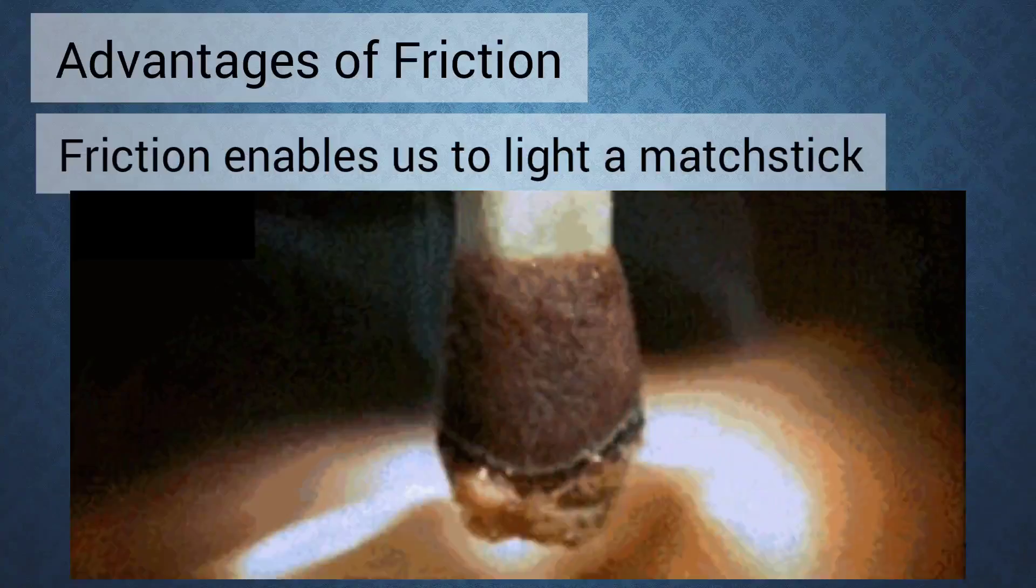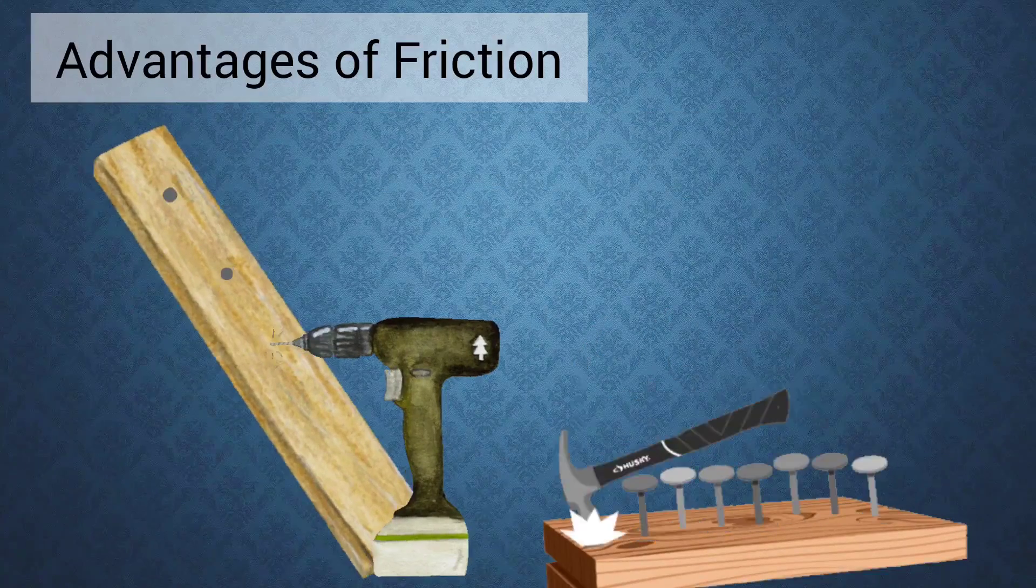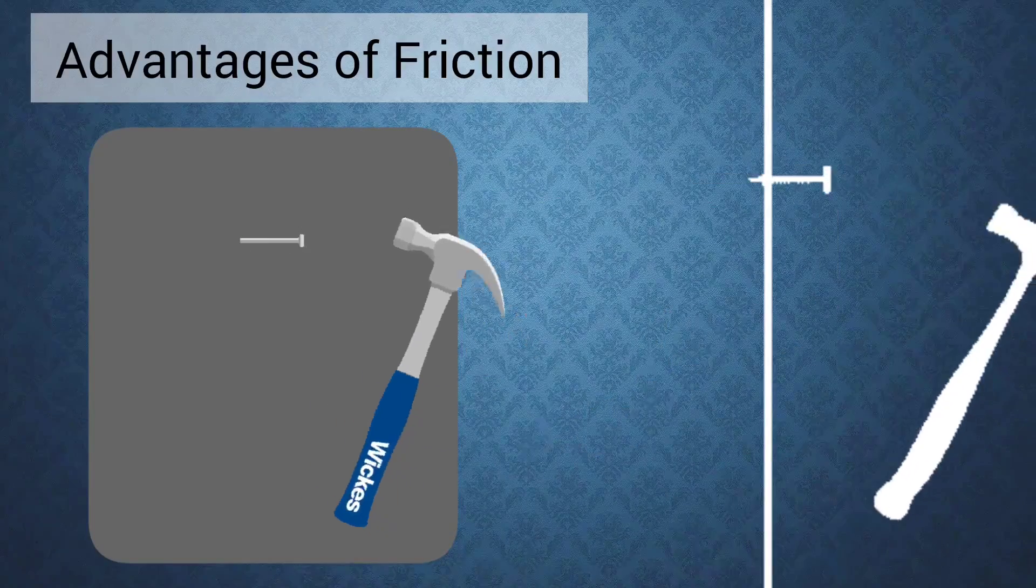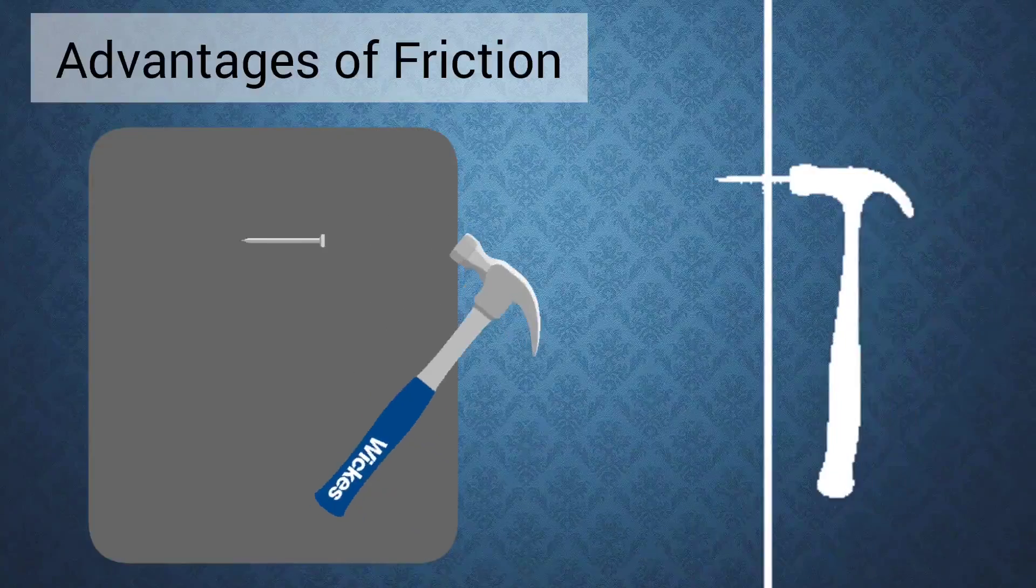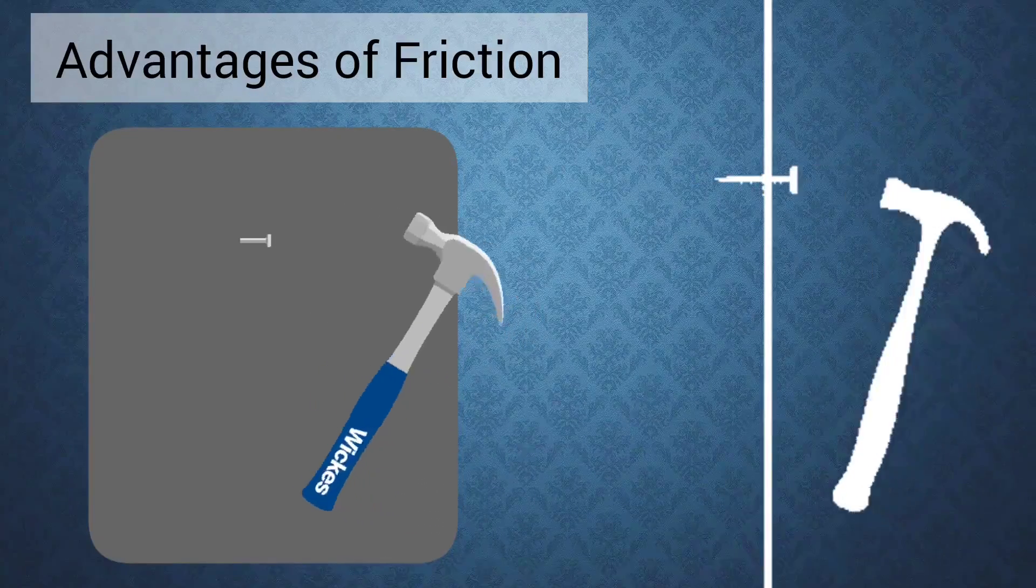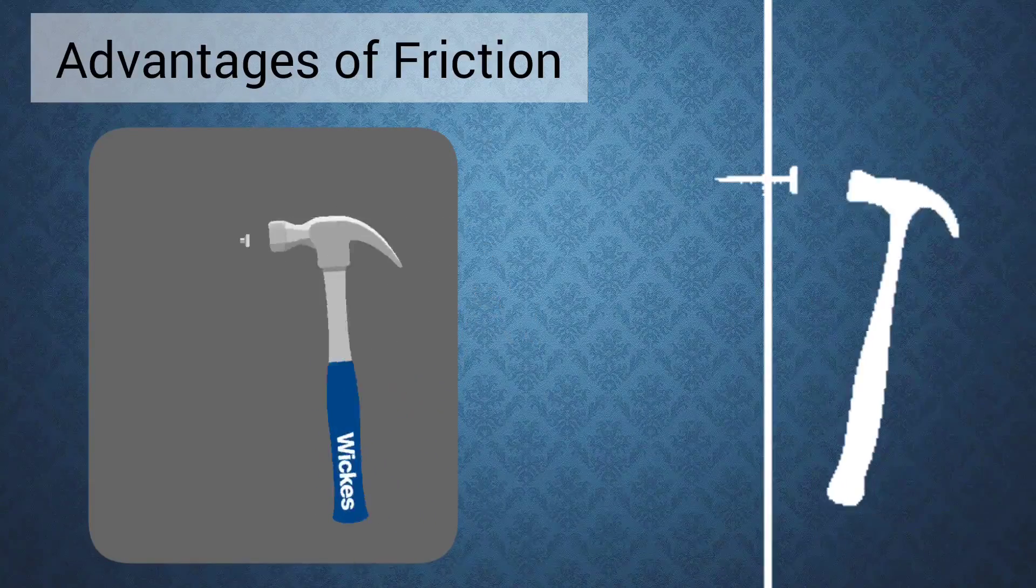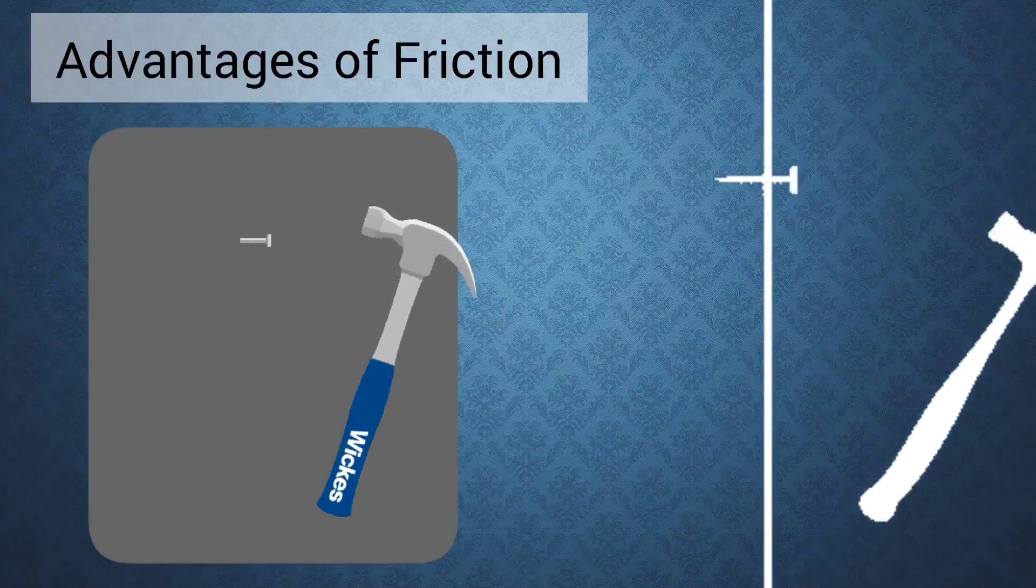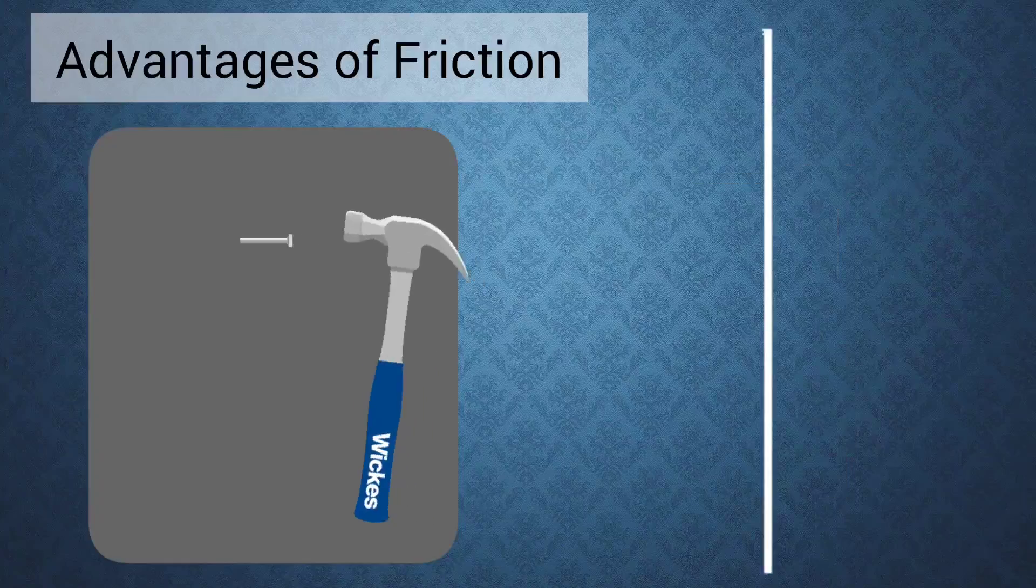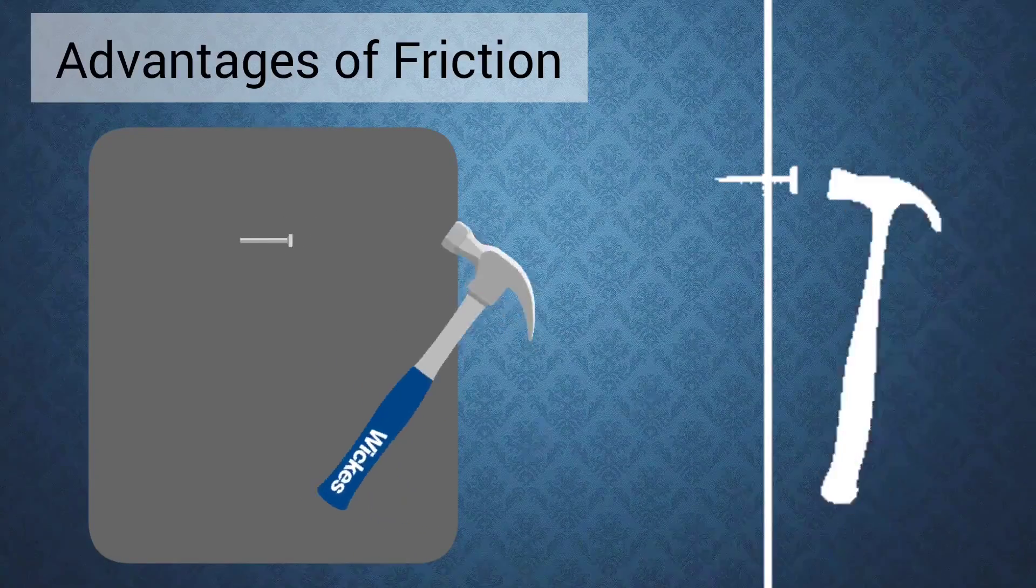It is the force of friction that holds screws and nails in the wood. We are able to fix nails in a wall due to friction. When we hammer a nail into the wall it is the friction between the surface of nail and wall which holds the nail tightly in the wall. Without friction nails could not be fixed in the wall to hold things. Understood?